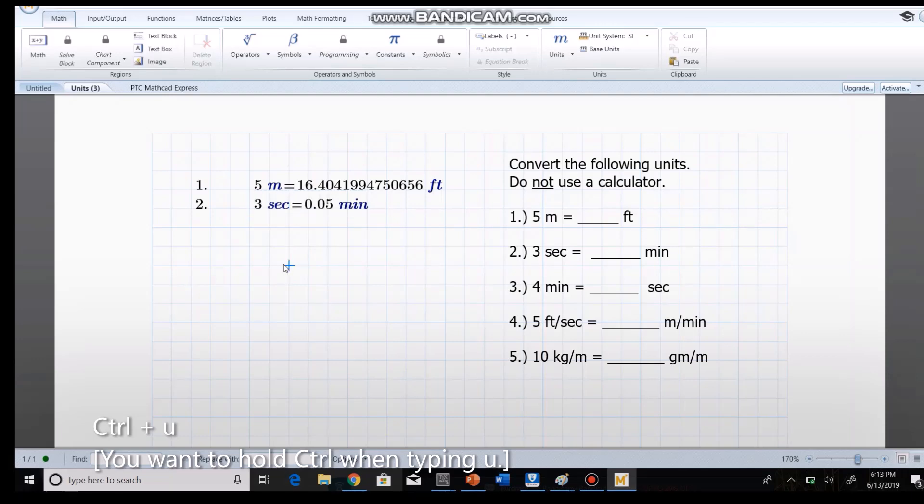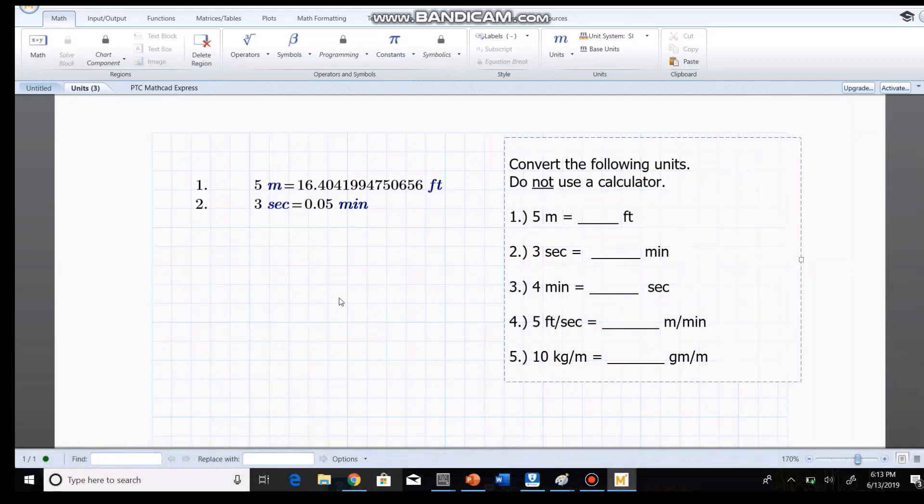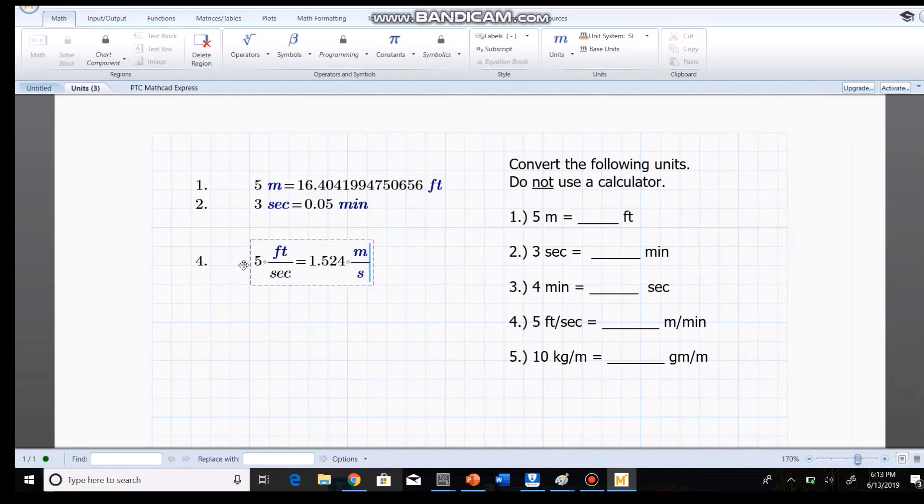I'm gonna skip number three. I'm gonna go to number four on here. I'll let you do number three and five. So if you go to number four, you type in five and then we write feet per second, and then we hit equals. And then notice that this shows up again. It's not blue here.